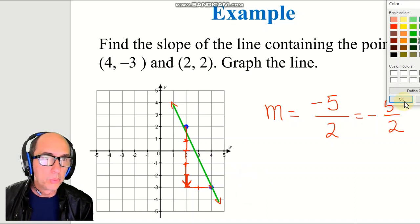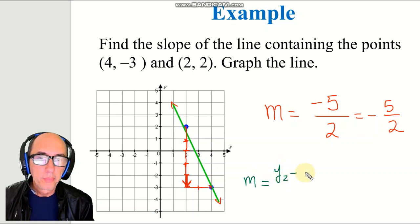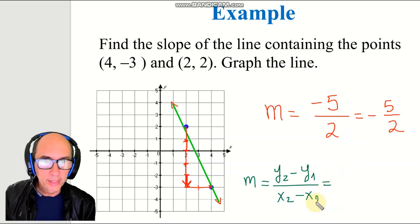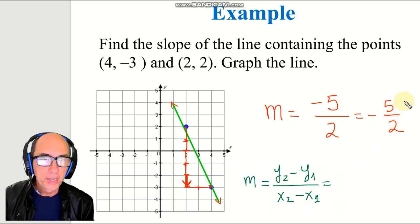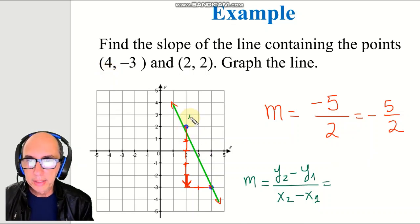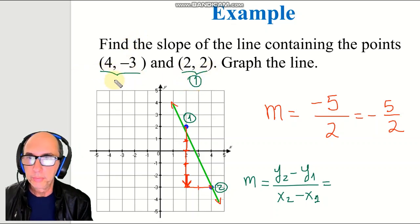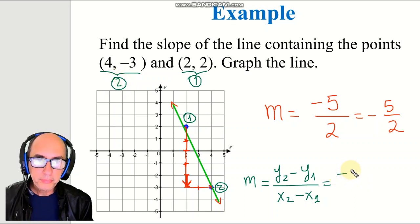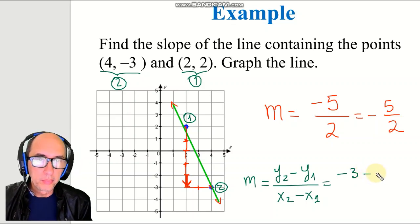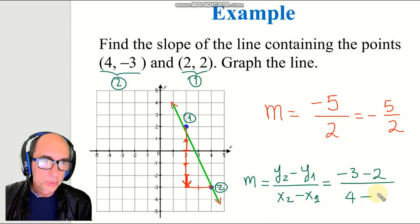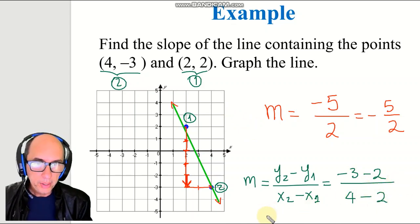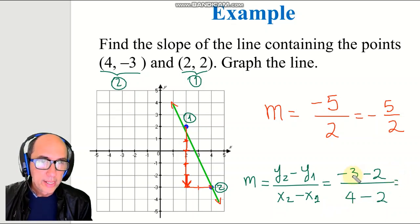Let's verify using the formula. M equals y2 minus y1 over x2 minus x1. It doesn't matter which we call point 1 and point 2. Let's say y2 is negative 3, minus y1 which is 2, over x2 which is 4, minus x1 which is 2. Negative 3 minus 2 is negative 5, and 4 minus 2 is positive 2. We get the same result: negative 5 over 2.